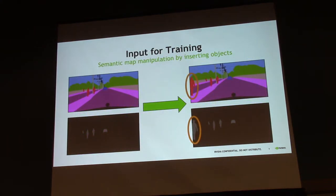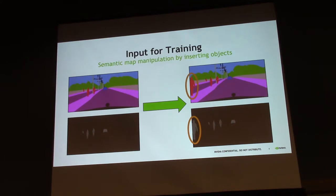Our input is a semantic map and an instance segmentation map, and we insert a new object into both the semantic map and the instance segmentation map. Why do we use the semantic map instead of the RGB image? The first reason is that on a semantic map you don't have to worry about RGB appearances — it's simpler and more regular.